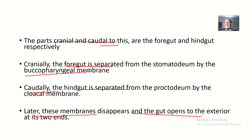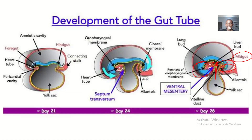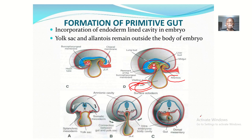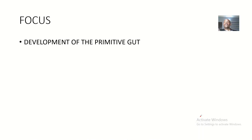The gut opens to the exterior at its two ends — your mouth is the opening at the cranial side and your anus is the opening at the caudal side. This is the story of the development of the primitive gut. When we talk about the digestive system in particular, we'll cover derivatives of the foregut, midgut, and hindgut. See you in the next lesson!